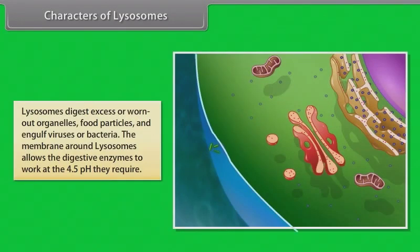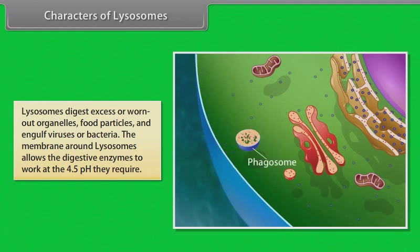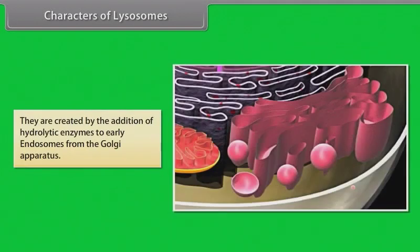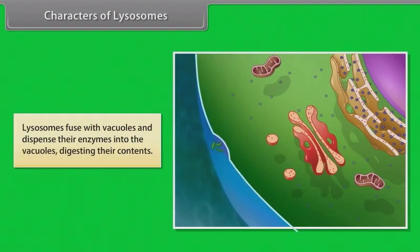Lysosomes digest excess or worn out organelles, food particles, and engulf viruses and bacteria. The membrane around lysosomes allows the digestive enzymes to work at the 4.5 pH they require. They are created by the addition of hydrolytic enzymes to early endosomes from the Golgi apparatus. Lysosomes fuse with vacuoles and dispense the enzymes into the vacuoles, digesting their contents.